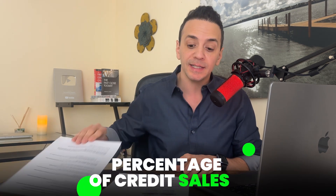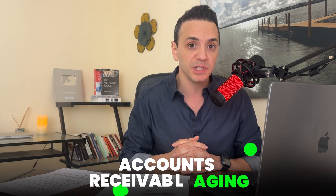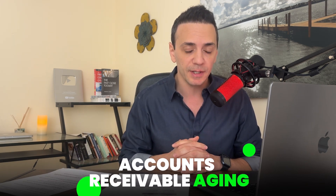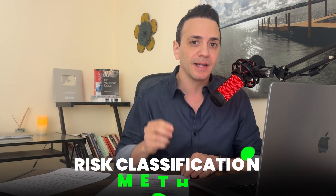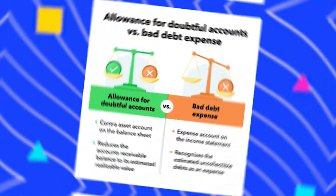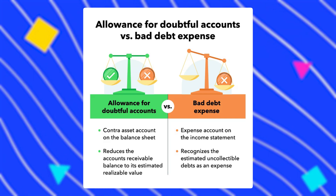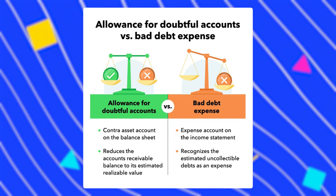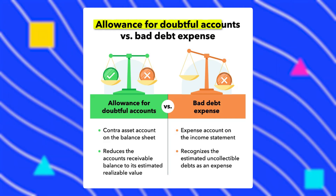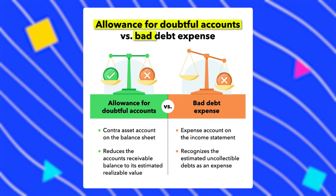Now let's dive into the three most common methods of calculating the allowance. The first is percentage of credit sales, the second is accounts receivable aging, and the third is the risk classification method — which sounds fancy but is really simple. When looking at the allowance we're dealing mainly with two accounts: allowance for doubtful accounts and bad debt expense.